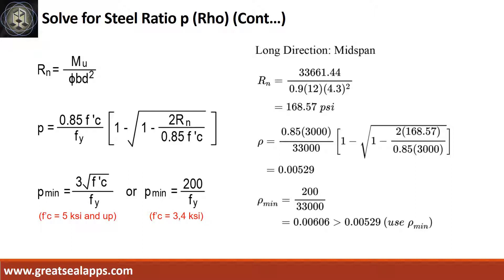Given long direction mid-span moment equals 33,661.44 inch-pounds, resistance factor equals 0.9, b equals 12, and d equals 4.3. The beam design ratio Rn equals 168.57 PSI, and reinforcement ratio ρ equals 0.00529. Use ρ minimum of 0.00606.